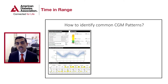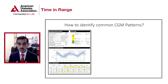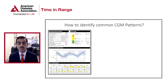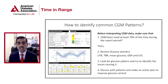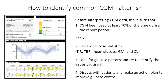The best way to identify common glucose or CGM patterns is to review the ambulatory glucose profile. Here is my easy way of interpreting the AGP in less than one minute. The first thing to look at is whether the patient is using the CGM for at least 70% of the time over the last two weeks. If they don't use the CGM for long enough, the data may not be interpretable.